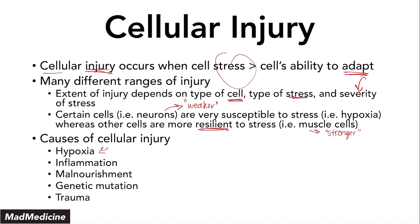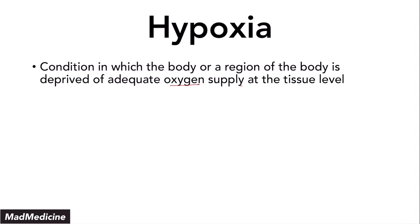In this lecture, we're going to be discussing hypoxia, so let's dive right into it. Hypoxia is a condition in the body where a part of the body — or the whole body — is deprived of enough oxygen supply at the tissue level. Hypoxia has to do specifically at the tissue level, which is very important to keep in mind.